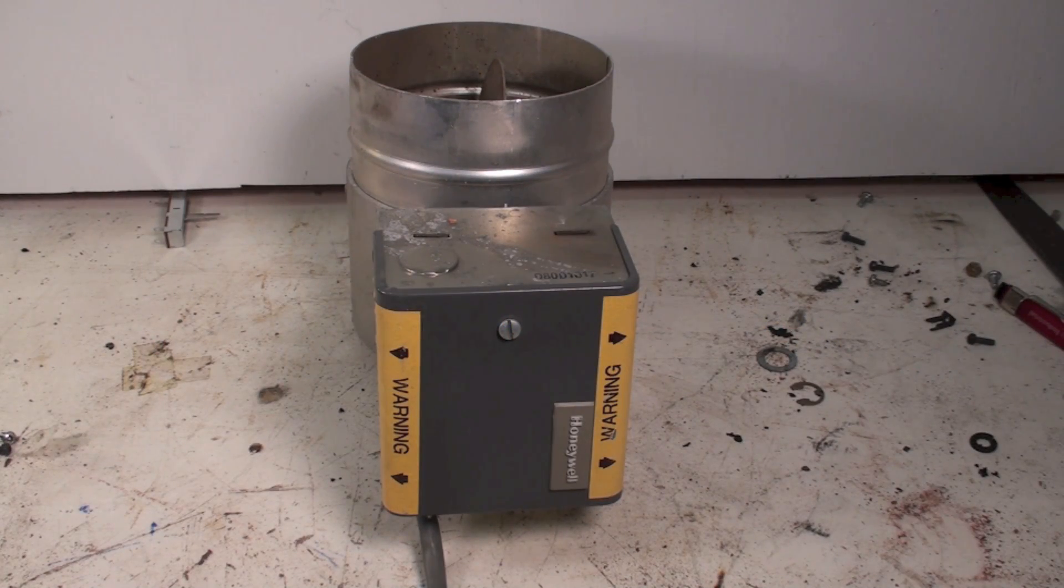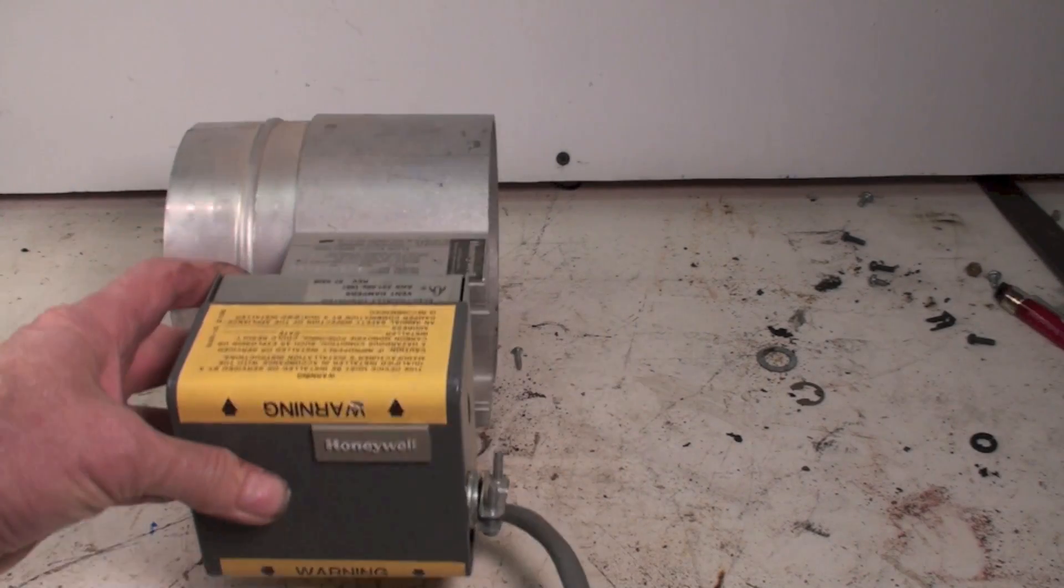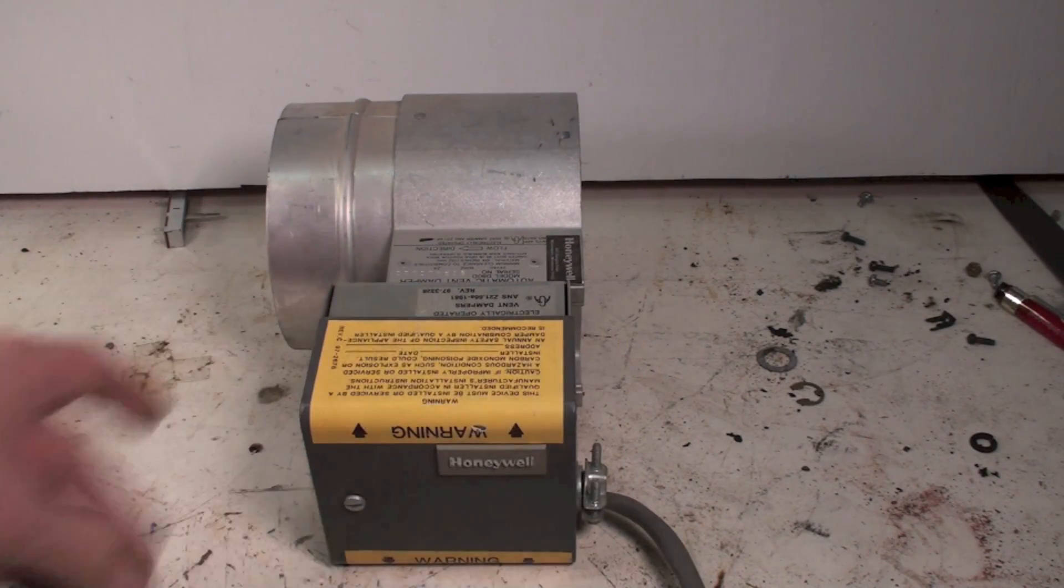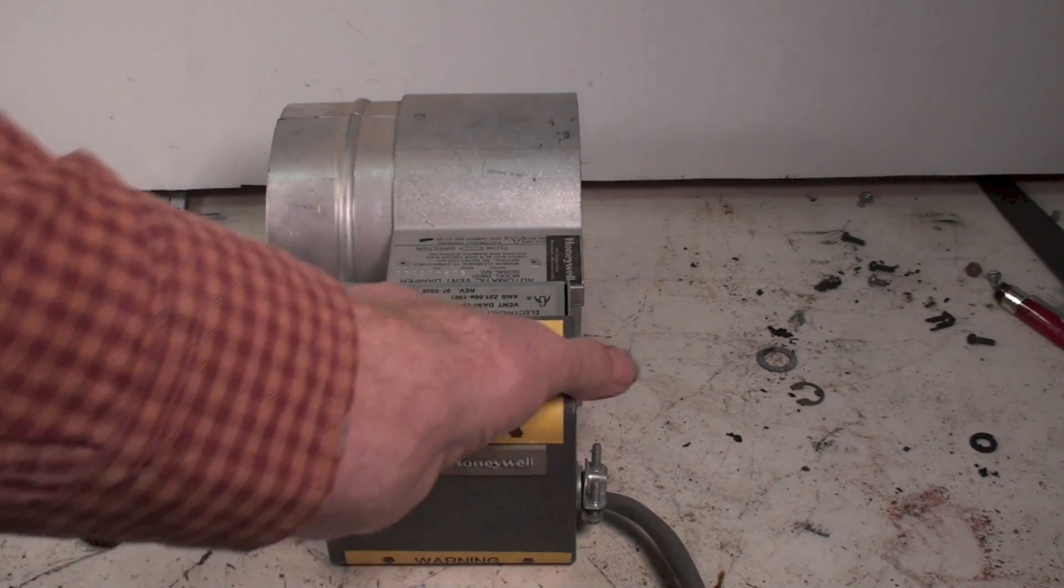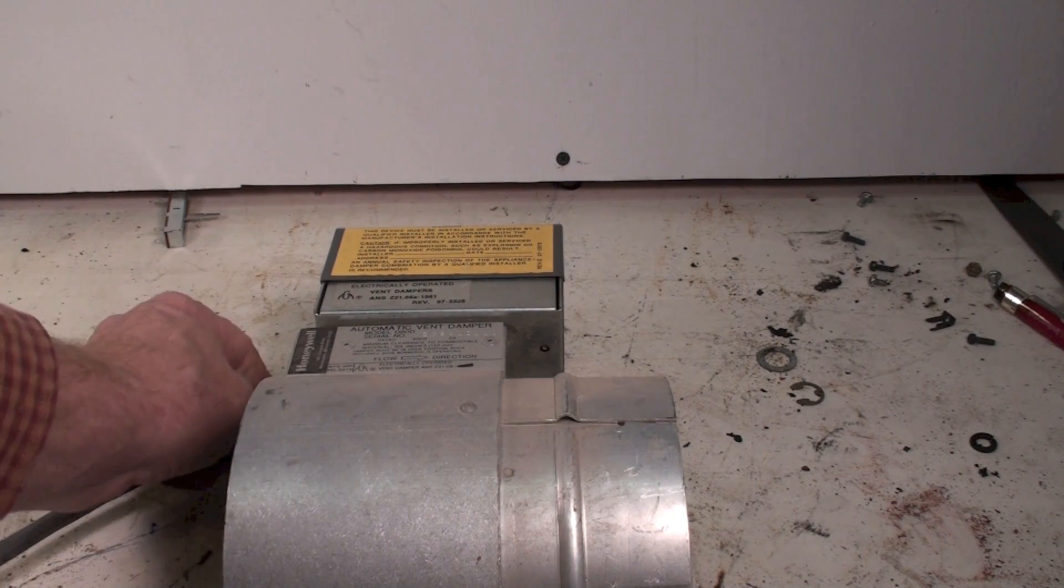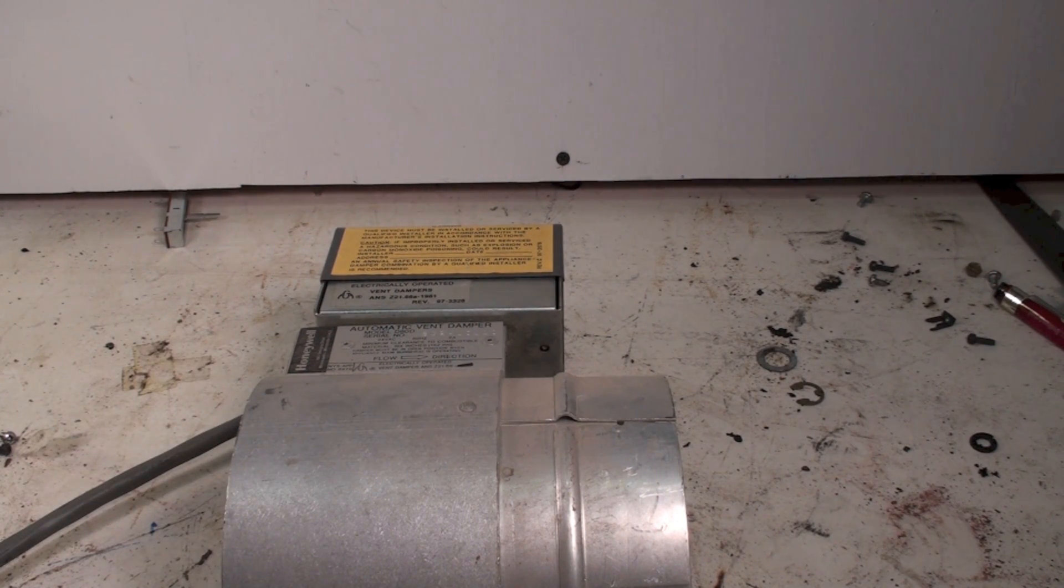Okay, this one is about the Honeywell vent damper. I'll get a model on this thing, but that's what they look like. They're in the vent, generally in the vent of drafted appliances.